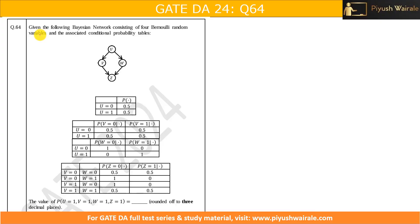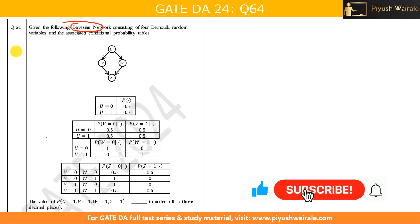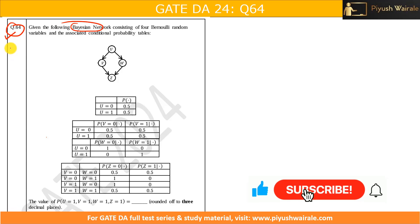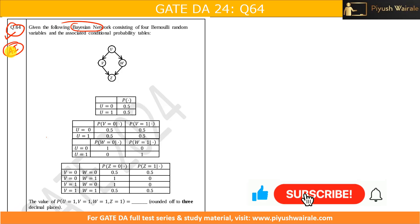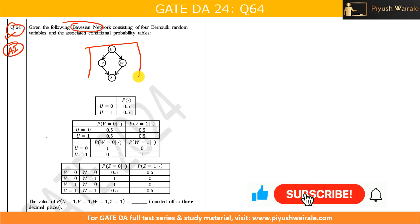Hello everyone. In the previous video we discussed two examples based on Bayesian networks. Now let us discuss this particular question — question number 64 from the GATE 2024 exam, based on the AI course, specifically the Bayesian network topic.